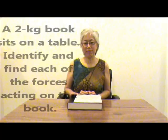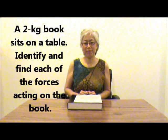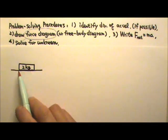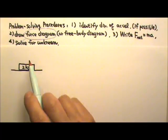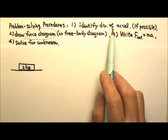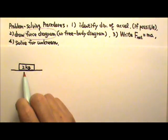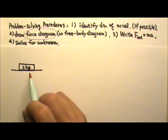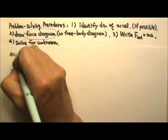The first example: we have a 2kg book sitting on the table. We want to identify and find each of the forces acting on this book. Let's follow the problem-solving procedures. First, identify the direction of acceleration. The book just sits there, stays at rest, so the acceleration is zero.